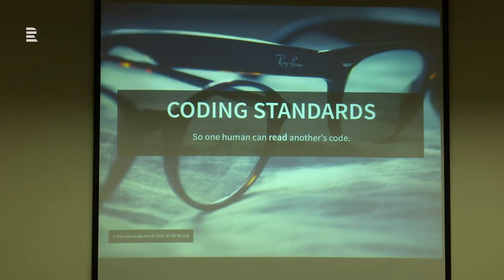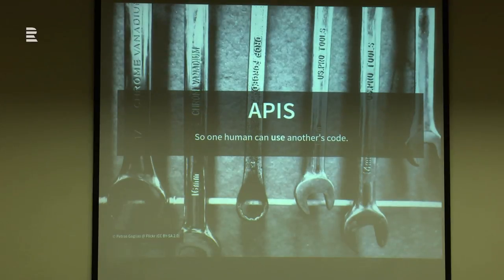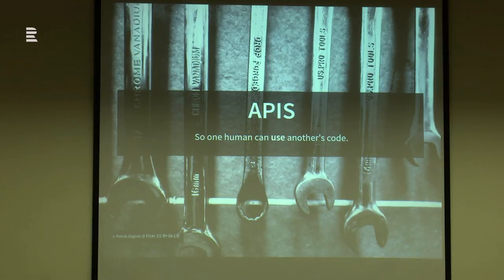Reading your own code is really the same as reading someone else's, because six months from now you don't know what you wrote. The other thing is APIs — this is the coding part of interoperability. We want to make sure another human can not only read our code but can also easily use it. Conventions are important for understanding and using each other's work.